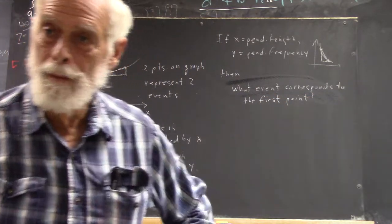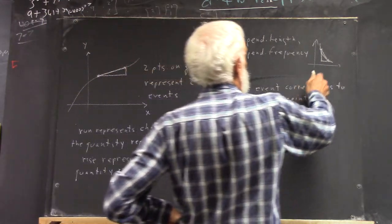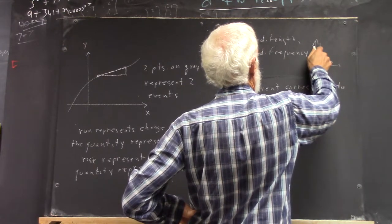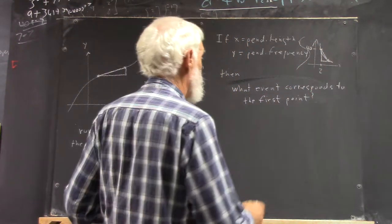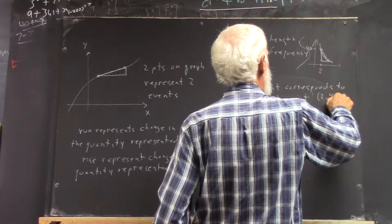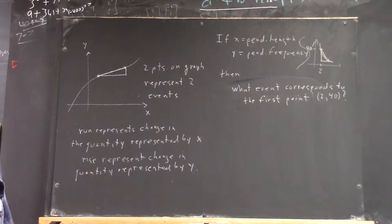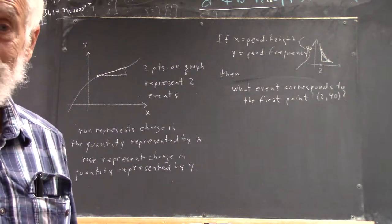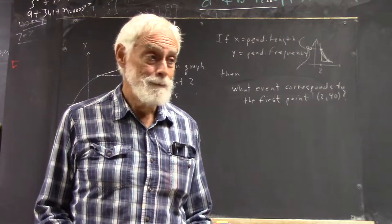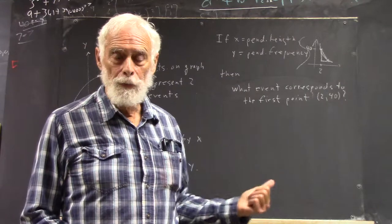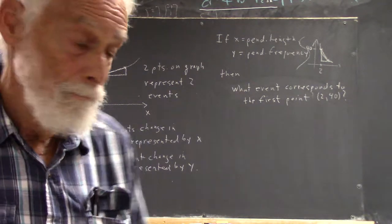This corresponds to the first point. If I put coordinates on this, let's say this is 2 and this is 40, so the first point is 2, 40. What's the event? What happens so that we would get that point on the graph? What happens with the pendulum? What's going on with the actual system? The system is the pendulum. What does the point 2, 40 tell us? It's a length of 2 and a frequency of 40. Yeah, when the pendulum has a length of 2, the frequency is 40.